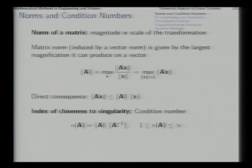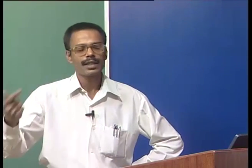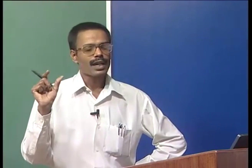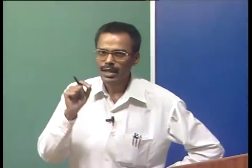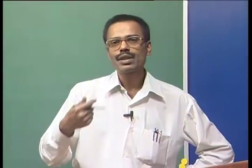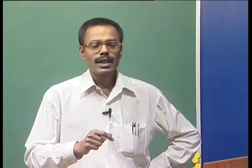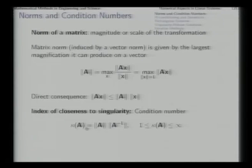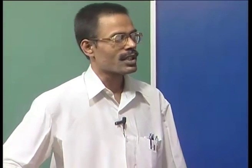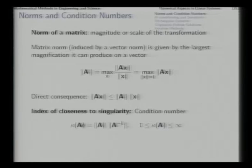Another important term we need to define is the condition number. We already know that when the columns of a square matrix are linearly dependent, we call that matrix singular — its determinant is 0 and the inverse does not exist. Even when the matrix is not exactly singular, we can talk of its closeness to singularity. If the determinant is close to 0, then we say the matrix is close to singularity, and there is a measure of closeness to singularity given by the condition number κ, which is the product of the norm of A and the norm of A inverse.